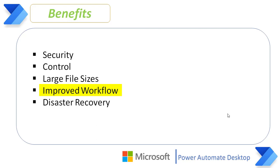The next benefit is improved workflow. Having a file-sharing process that is not uniform across your organization can have a negative impact on business productivity. Instead of sharing a single file at a time, you can send large amounts of data instantly. You can also continue working while large transfers are being made, or schedule massive transfers for nights or weekends so your workflow is not interrupted.